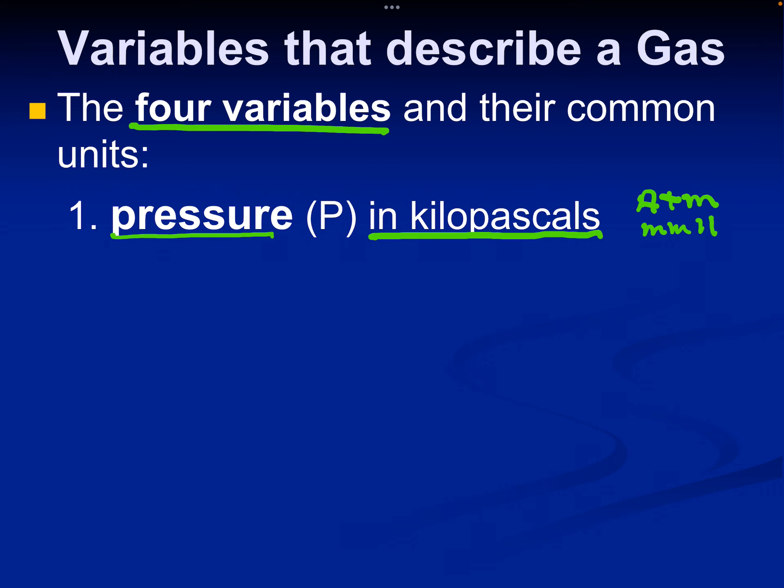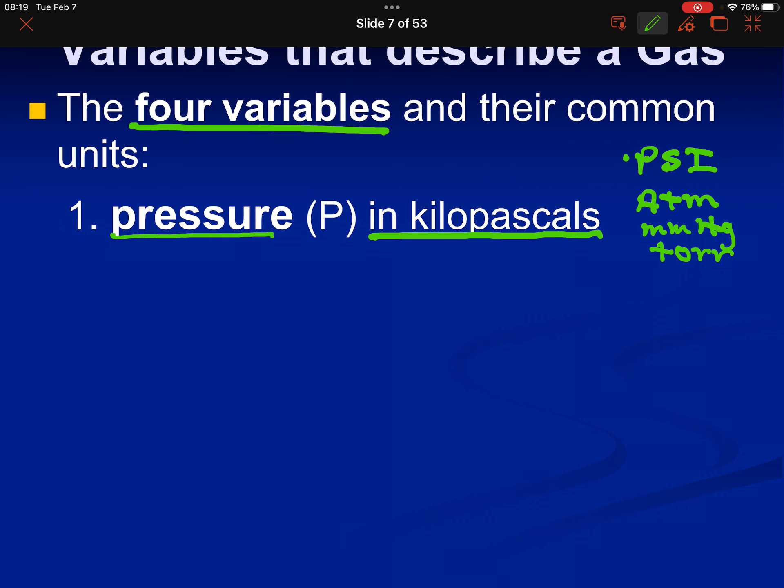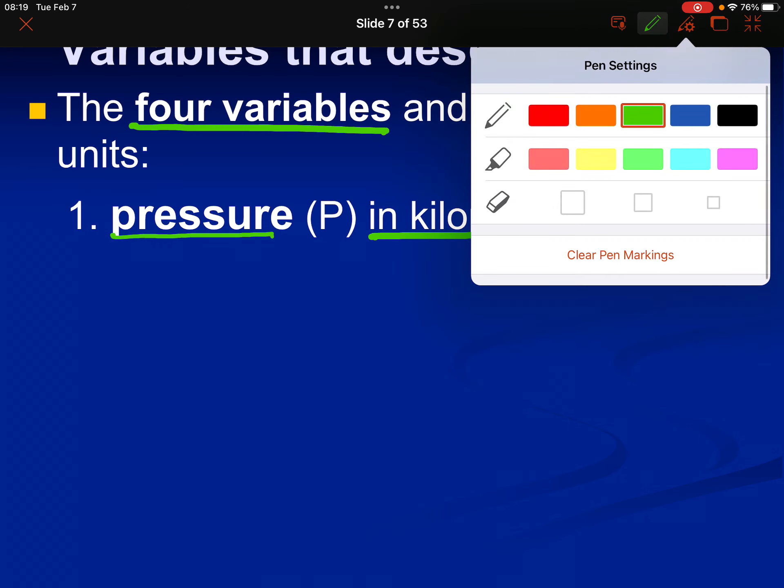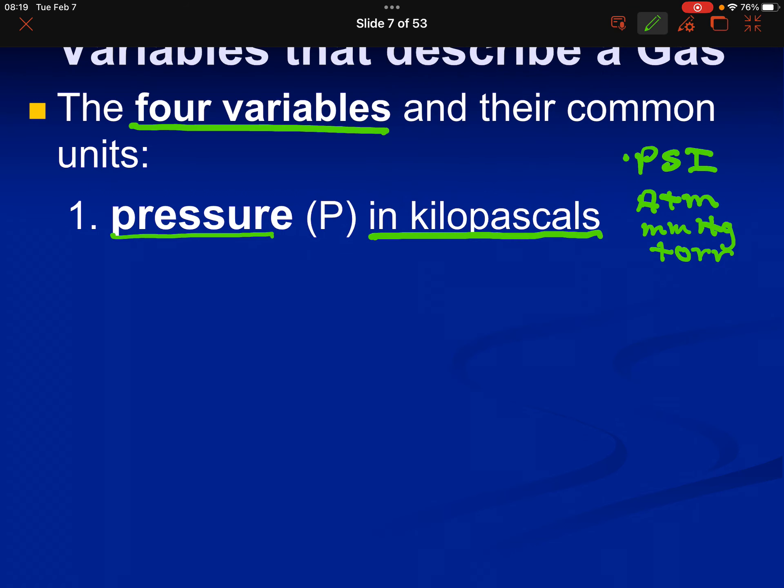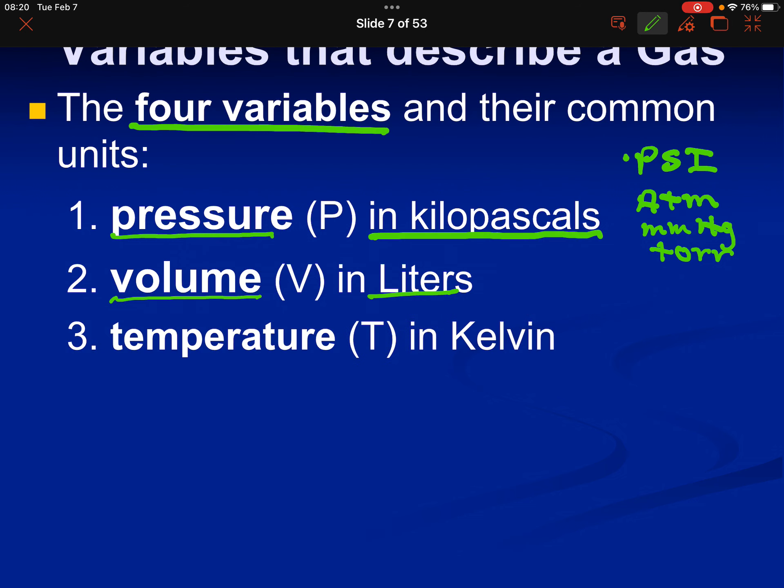So the four variables and their common units are: pressure, and pressure we usually measure in units of kilopascals. We also measure in units of atmospheres, millimeters mercury, torr, which is the same as millimeters mercury, and in the United States here, ugly, ugly PSI, pounds per square inch. And you should recall those.